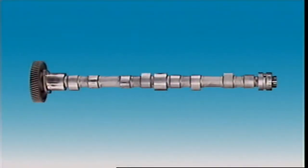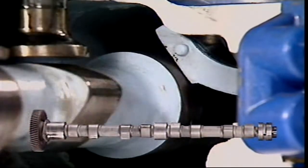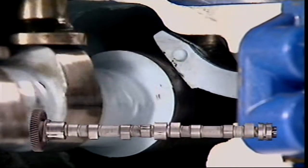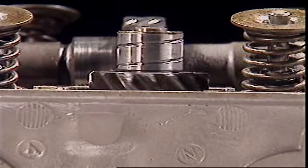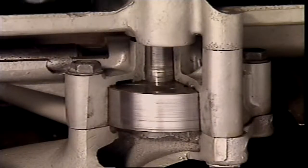The camshaft has a cam for each valve. In some cases there is an additional cam known as an eccentric to operate the fuel pump. A gear on the camshaft drives the ignition distributor and often an oil pump.